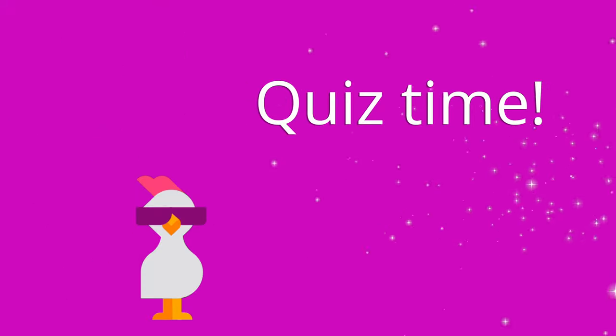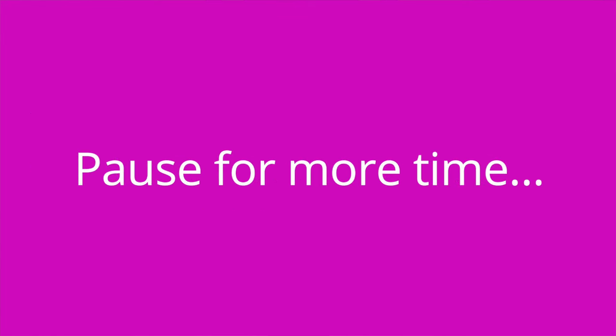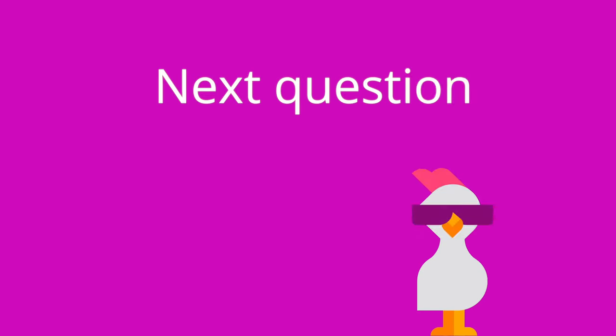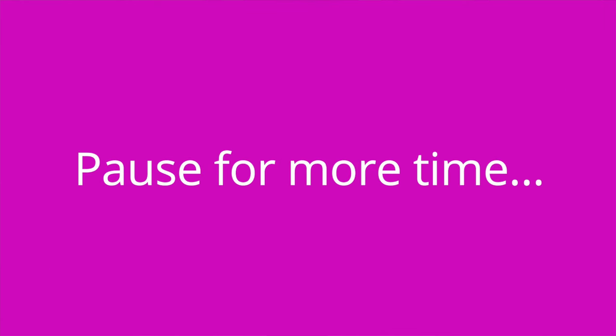It's quiz time and I've got three questions for you. Question number one: with failure to thrive, the child's weight is below what percent on the growth chart? The answer is five. Question number two: colic is diagnosed when crying episodes last more than blank hours a day, over blank days a week, and for more than blank weeks. The answer is three, three, and three, based on the rule of threes.